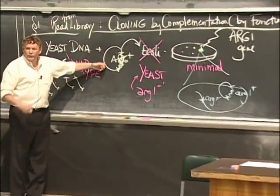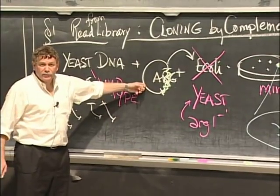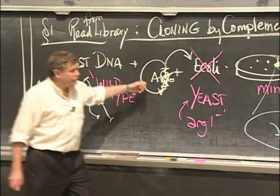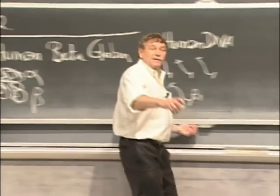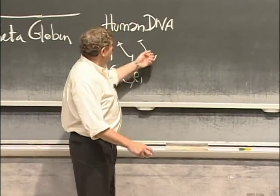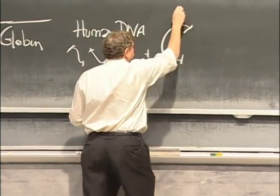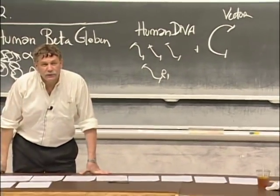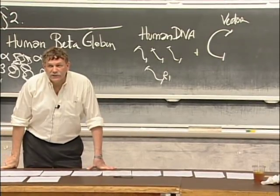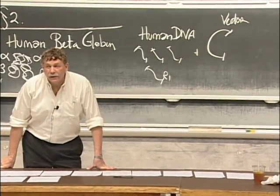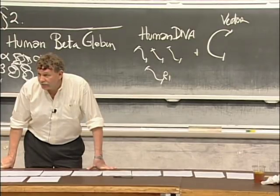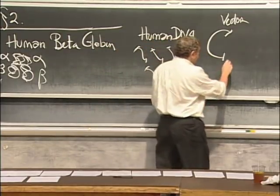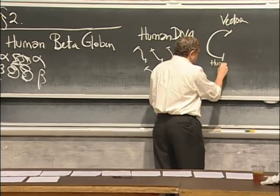Let's attach it to a vector. Actually, wait a second. This vector here. I told you that there were vectors that could grow in E. coli. Did I ever tell you there were vectors that could grow in yeast? There are. And they're in the catalog. Now what do I do? I'm going to attach this to a vector. What vector do I want to attach this to? Where's it going to grow?